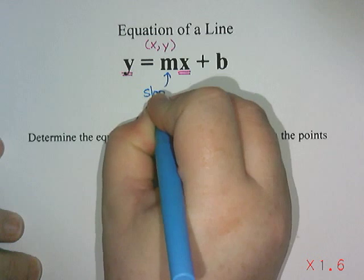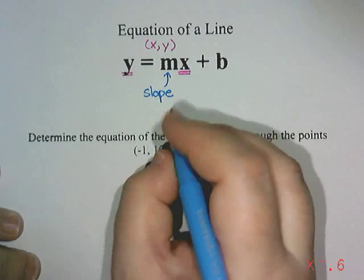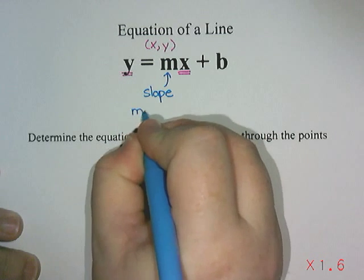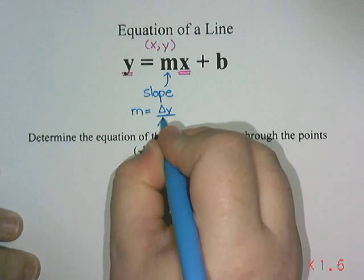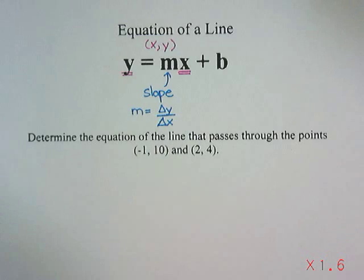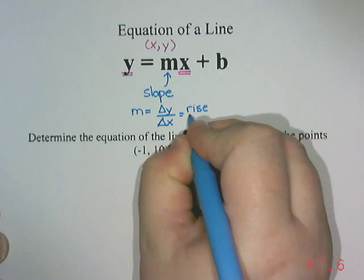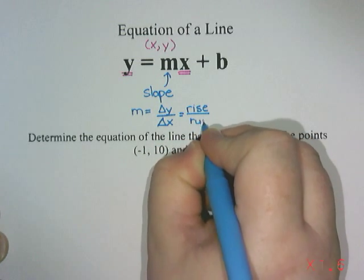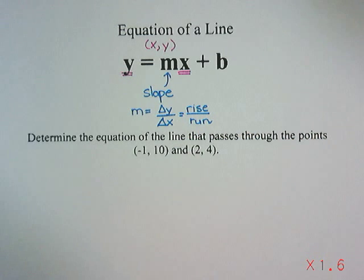Now slope is how steep your line is, how much it's going up by each time, how far over it goes each time. The formula for slope is delta y or the change in the y values divided by delta x or the change in the x values. Sometimes we also call that rise and the change in x we call run. So slope can be found by doing rise over run or delta y over delta x or there is a formula that we'll talk about in a minute.